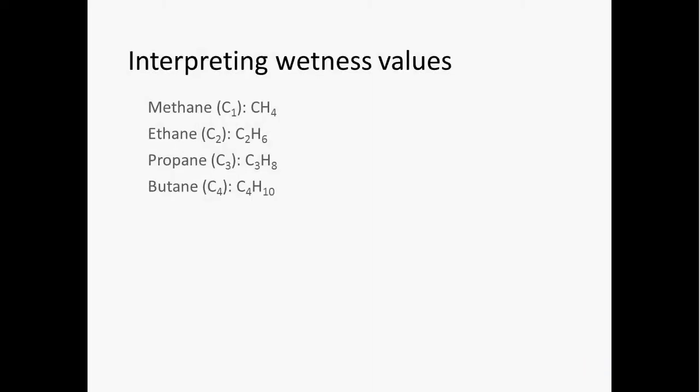So how do we interpret gas composition in terms of what it can tell us about how that methane formed, how that natural gas formed? It seems that microbes don't make higher chain hydrocarbon gases to a large extent. There have been a couple of studies that have shown that microbes can make ethane and they can make propane, but these don't seem to be major processes. The microbes are kind of oriented towards ultimately producing methane.